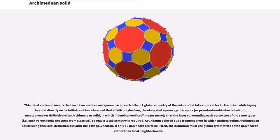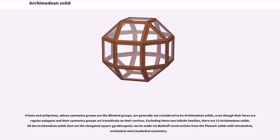Grundbaum pointed out a frequent error in which authors define Archimedean solids using this local definition but omit the fourteenth polyhedron. If only thirteen polyhedra are to be listed, the definition must use global symmetries of the polyhedron rather than local neighborhoods.